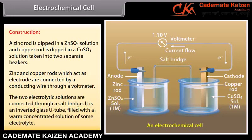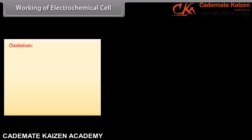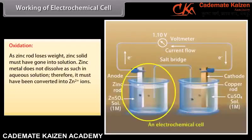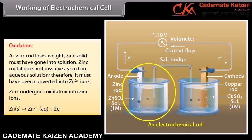Definition: The branch of chemistry which deals with the study of relationship between electrical energy and chemical energy, and interconversion of one form of energy into another, is called electrochemistry. A large number of chemical transformations and industrial processes are based on electrochemistry, for example extraction of reactive metals, purification of metals, and electroplating of metals.